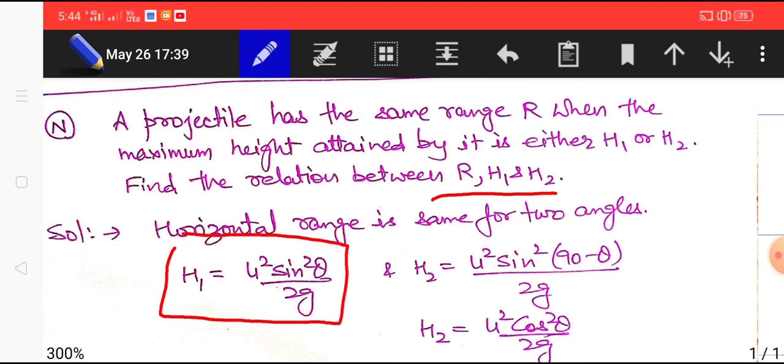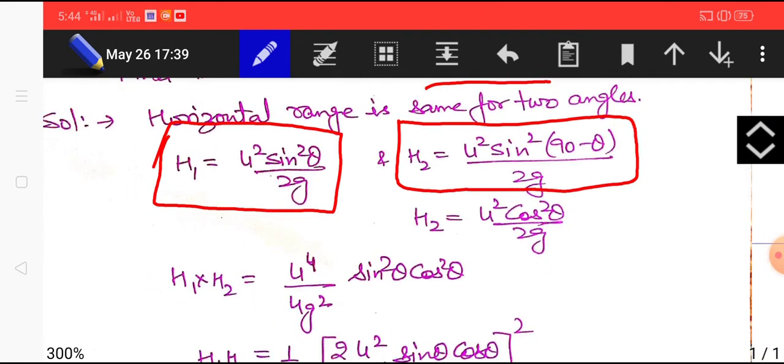Applying the knowledge of same concept, let us consider h1 equals u squared sine squared theta divided by 2g and h2 equals u squared sine squared 90 minus theta divided by 2g. Sine 90 minus theta is cos theta so I can also write h2 as u squared cos squared theta divided by 2g.